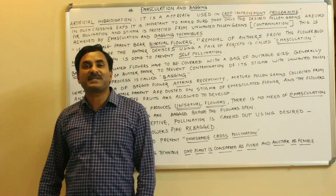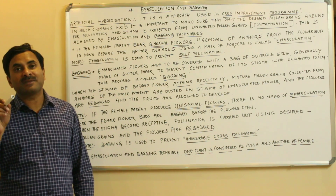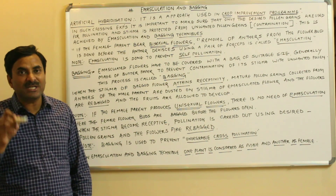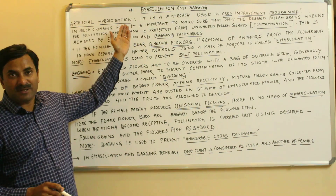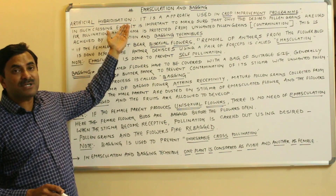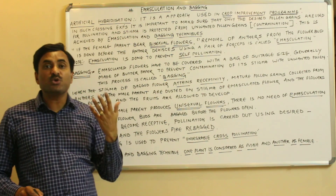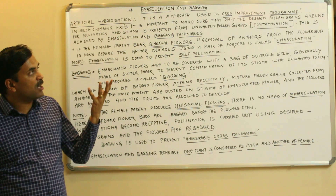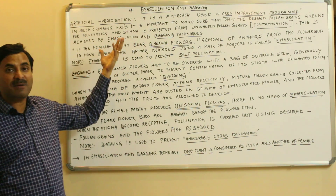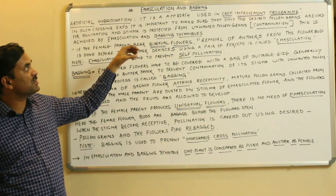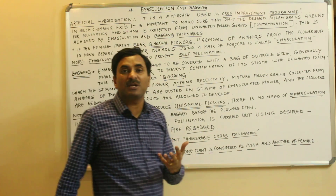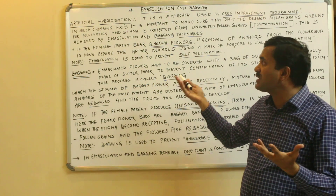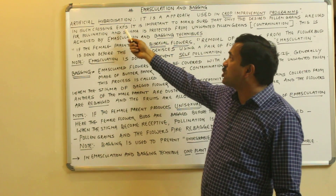Today we are going to discuss emasculation and the bagging technique. These techniques are used to achieve artificial hybridization, which is an approach used for the crop improvement program. To improve crops, we use artificial hybridization, and to achieve this, we perform the processes of emasculation and bagging.